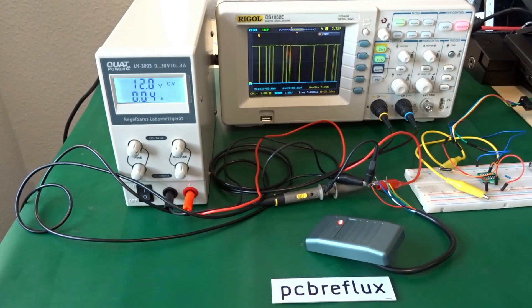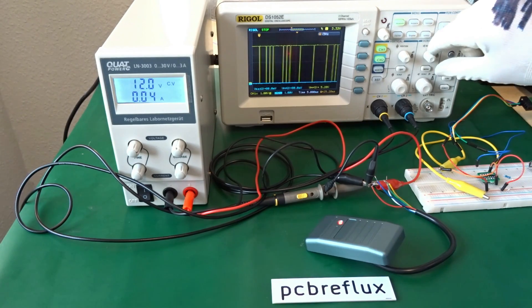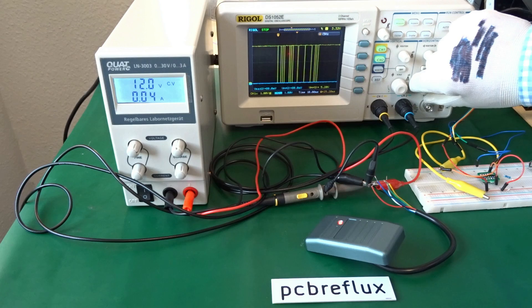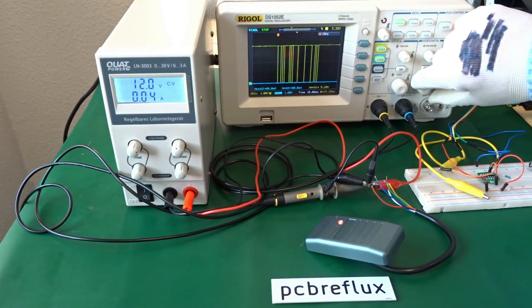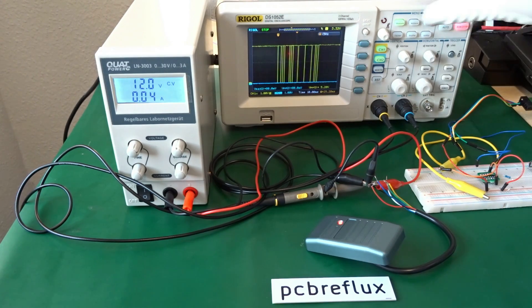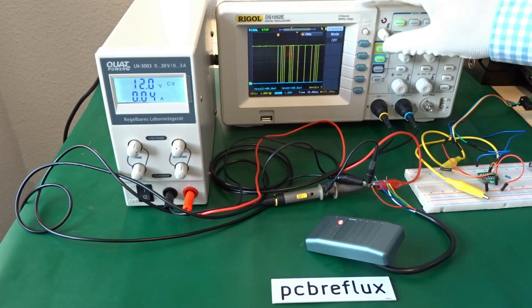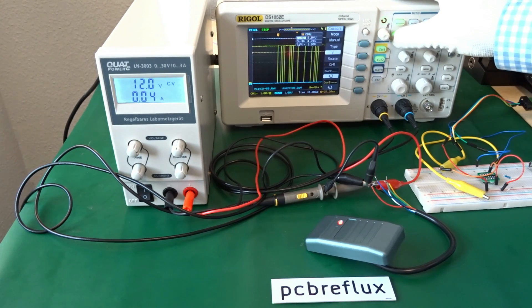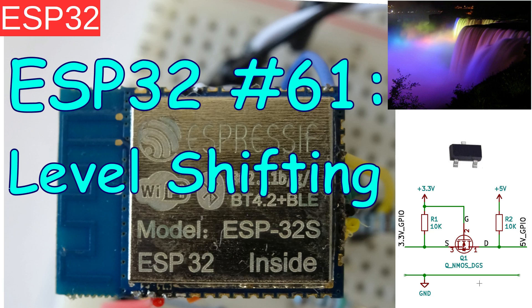Hi, today just a quick tip for all ESP32 users with a 3.3V level GPIO pin and what to do if you want to use a 5V compatible sensor or maybe a higher voltage like 12V or so on.